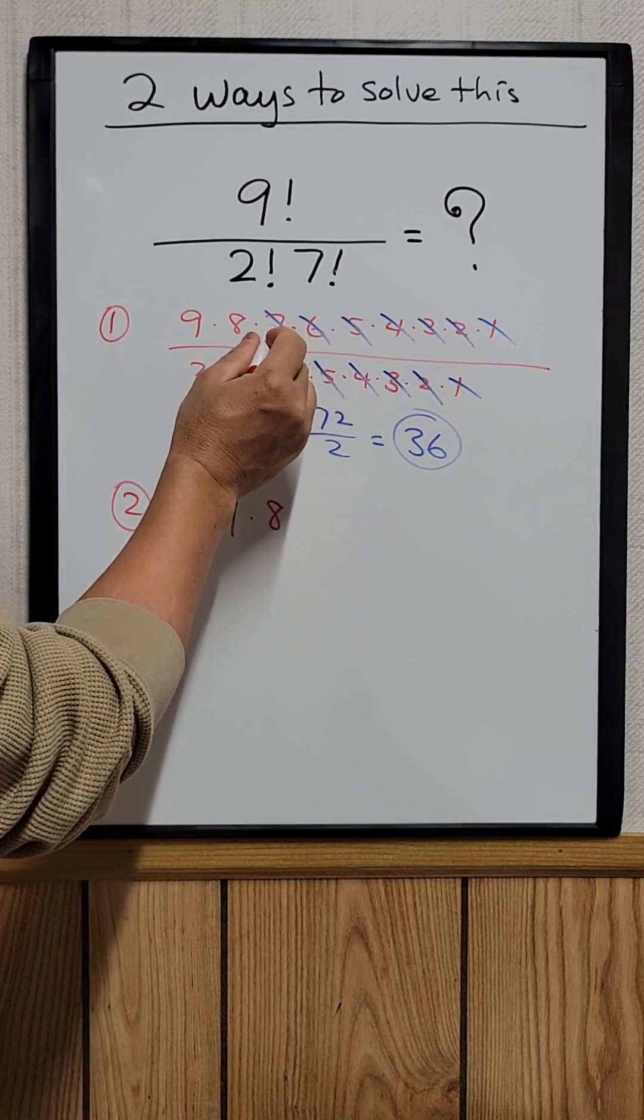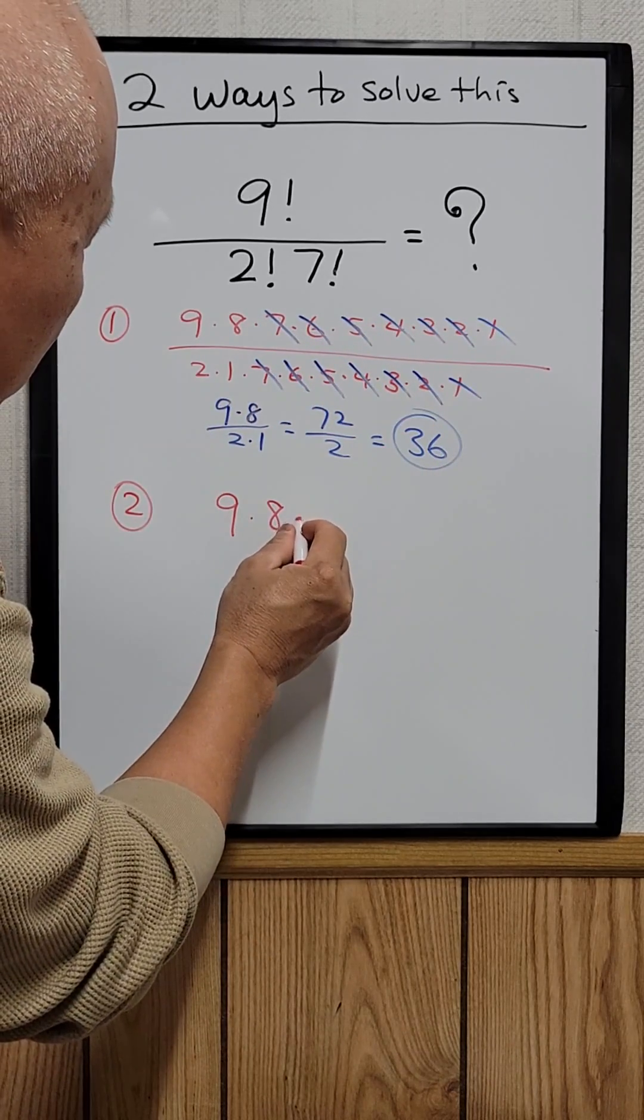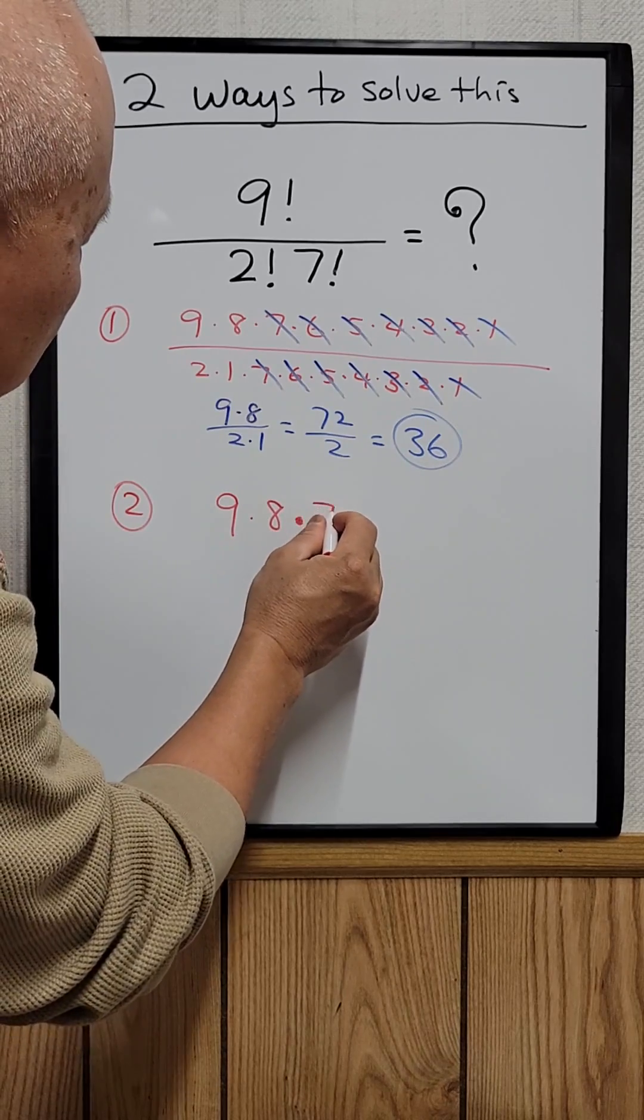And then instead of continuing with seven times six times five times four times three times two, all you need to do is just say times seven factorial.